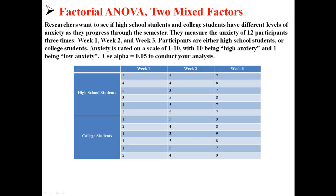Here is my question. Researchers want to see if high school students and college students have different levels of anxiety as they progress through the semester. They measure the anxiety of 12 participants at three times: week 1, week 2, and week 3. Participants are either high school students or college students, and anxiety is rated on a scale of 1 to 10, with 10 being high and 1 being low. Use an alpha of 0.05 to conduct this analysis.